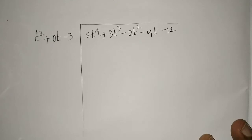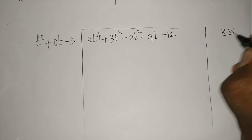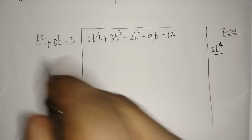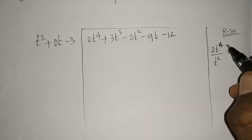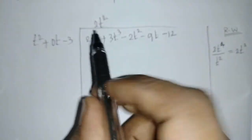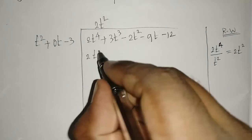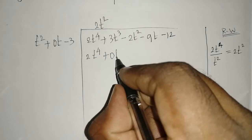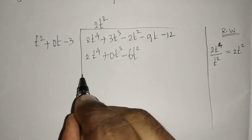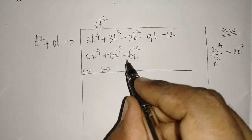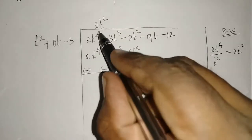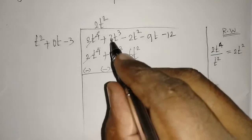For the first step in rough work: divide the first term of the dividend by the first term of the divisor — 2t⁴ ÷ t² = 2t². Write 2t² in the quotient. Now multiply 2t² by the divisor: 2t² × t² = 2t⁴, 2t² × 0t = 0t³, and 2t² × (−3) = −6t². Change all signs and cancel: 2t⁴ cancels, 3t³ and 0t³ give 3t³.